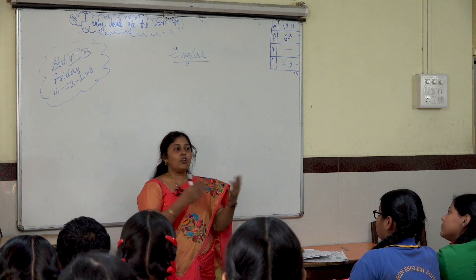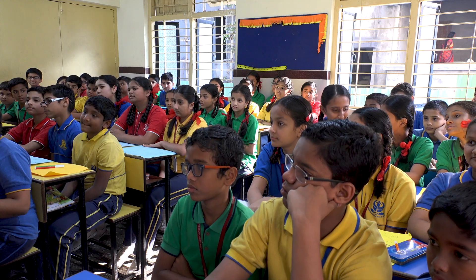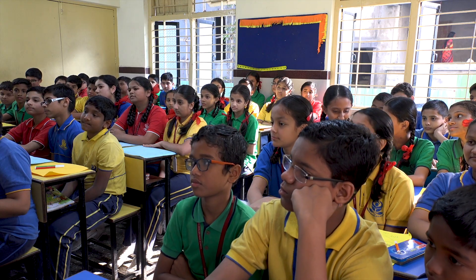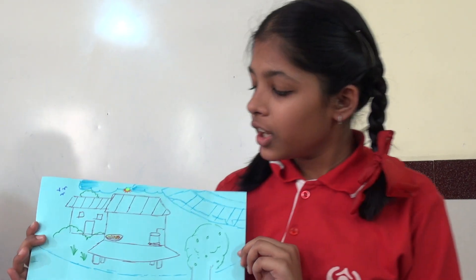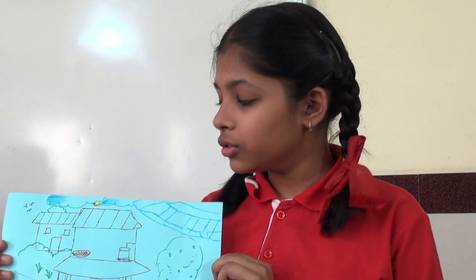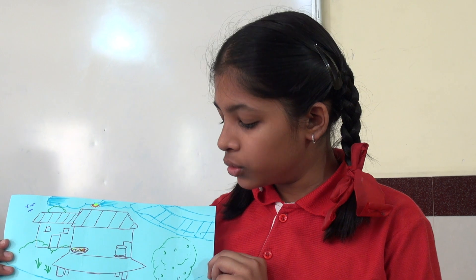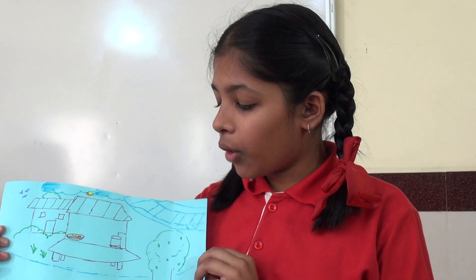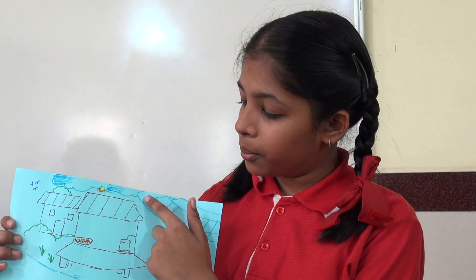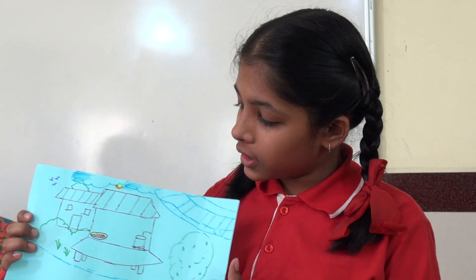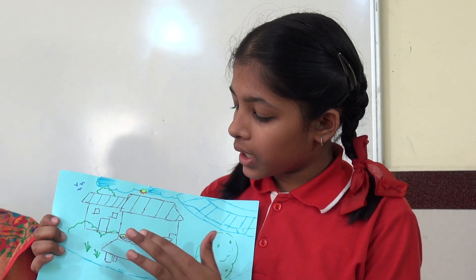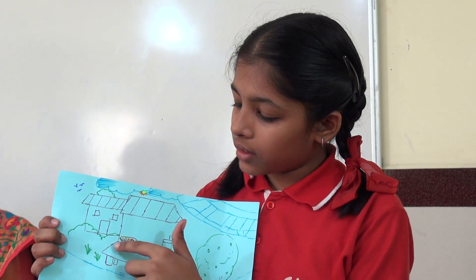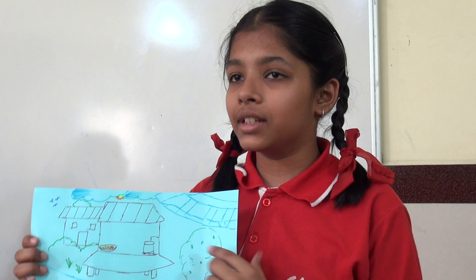Now let the whole class see some examples of what has been discussed. This drawing is made by my friend Grushti. She has shown the Kashmir view — the climate is very cool, the water is flowing, and here she has drawn a bridge. The trees are there and the houses are there.